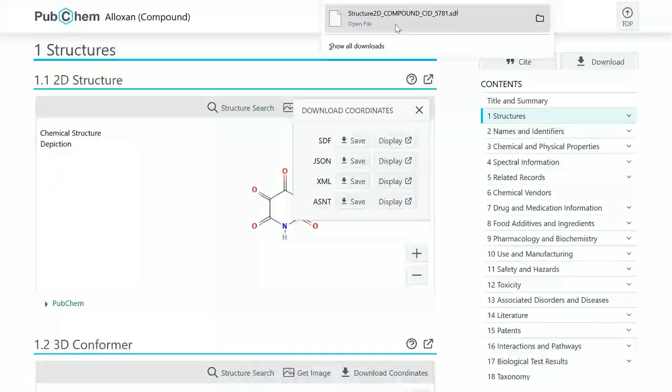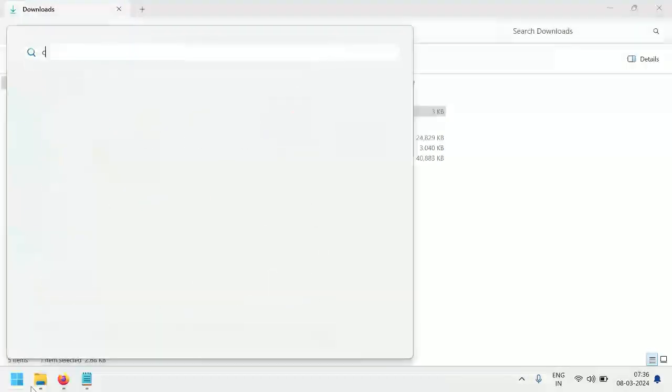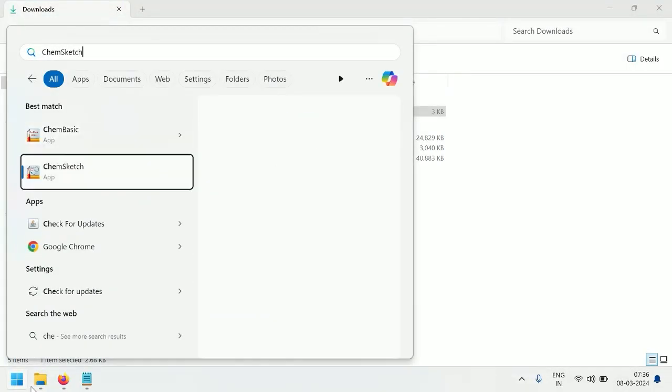Open the structure file. Once the download is complete, you can open the structure file using chemical drawing software or molecular visualization tools like ChemDraw, MarvinSketch, or Jmol.